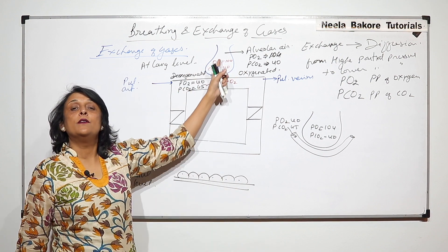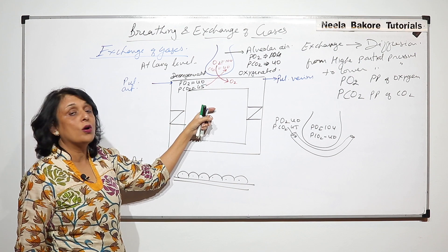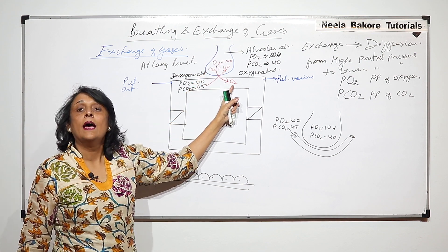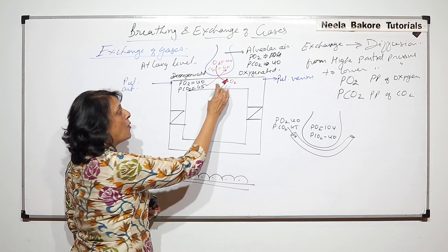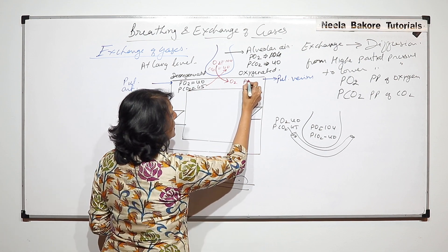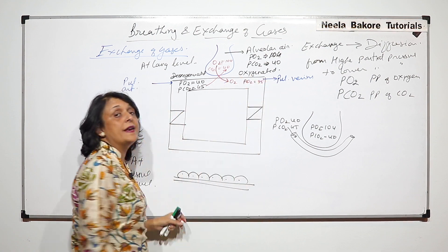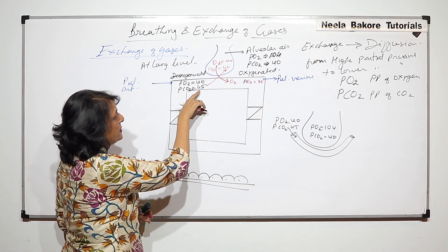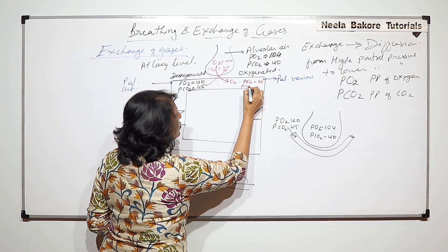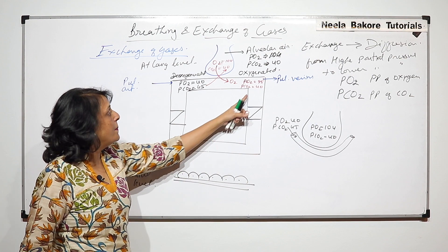Diffusion is from higher partial pressure to lower partial pressure. So oxygen diffuses from alveolar air (PO2=104) into the blood (PO2=40). Carbon dioxide diffuses from the blood (PCO2=45) into the alveolar air (PCO2=40). After this exchange, the blood PO2 rises to 95 and PCO2 falls to 40. The blood is now oxygenated.